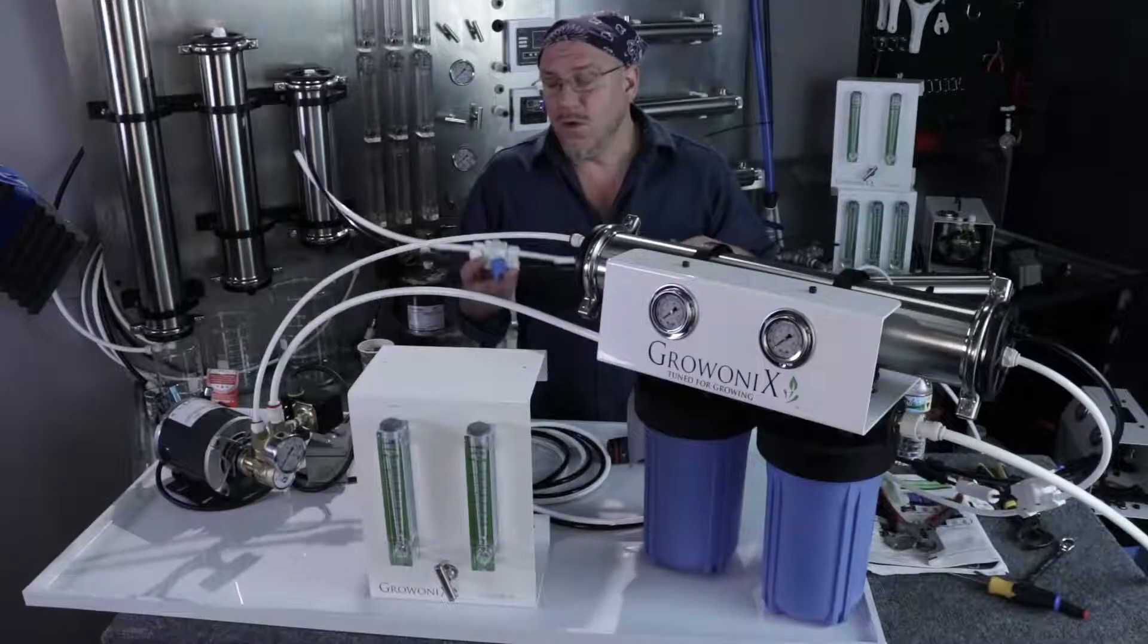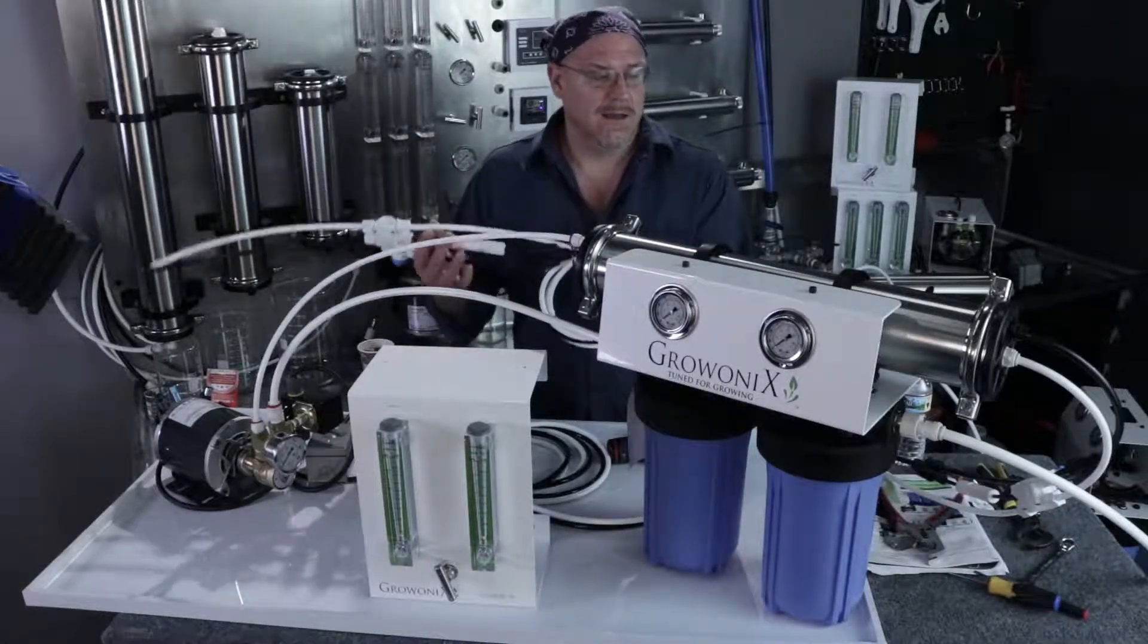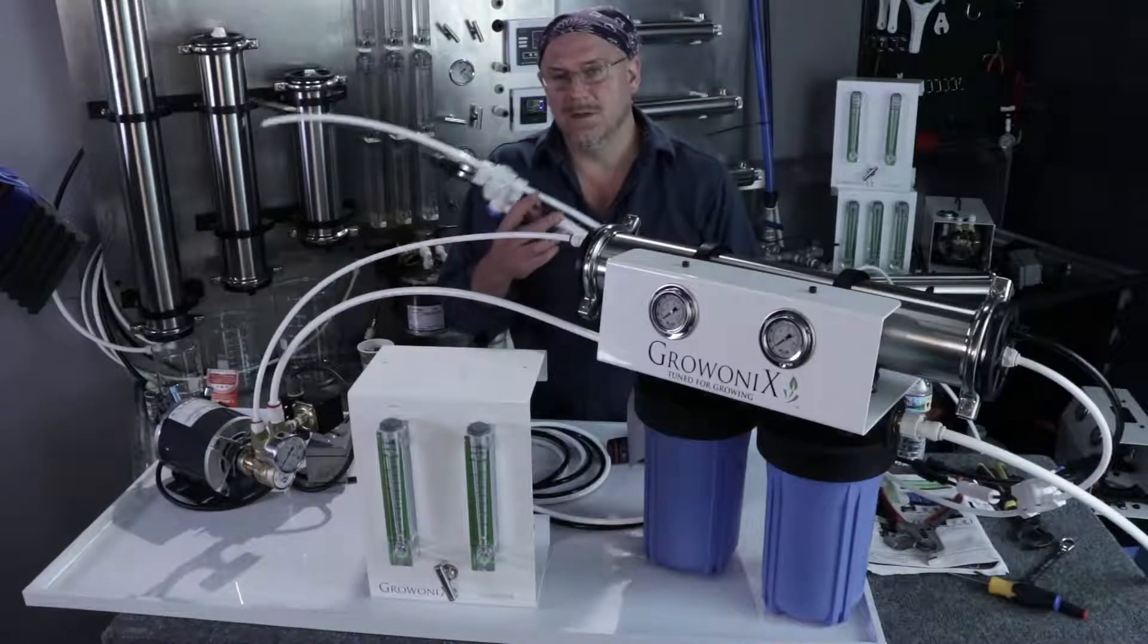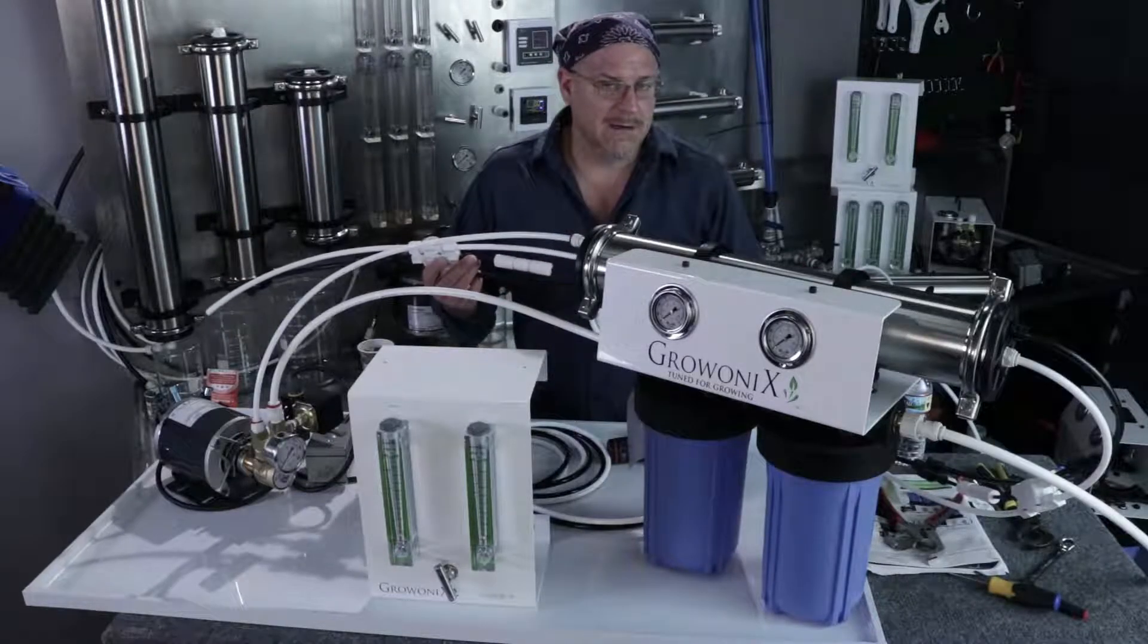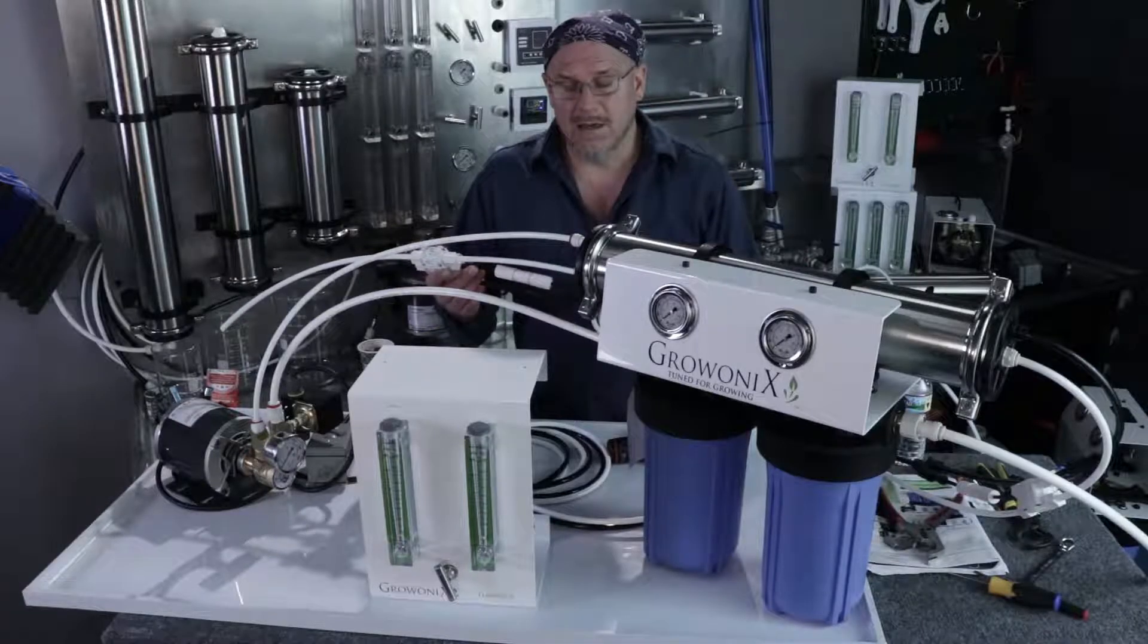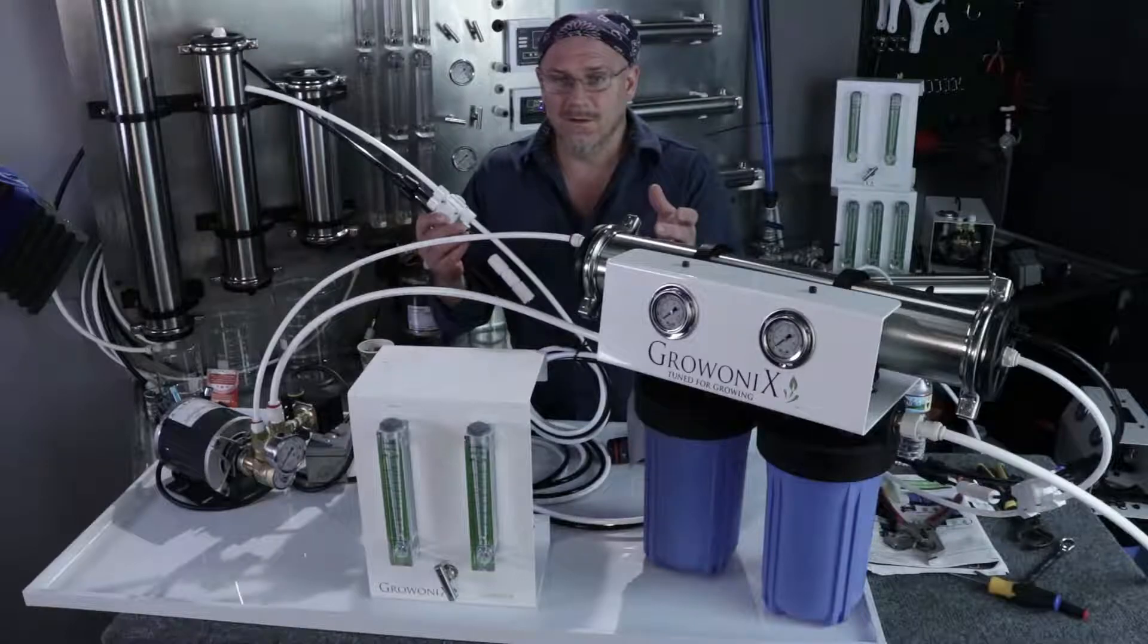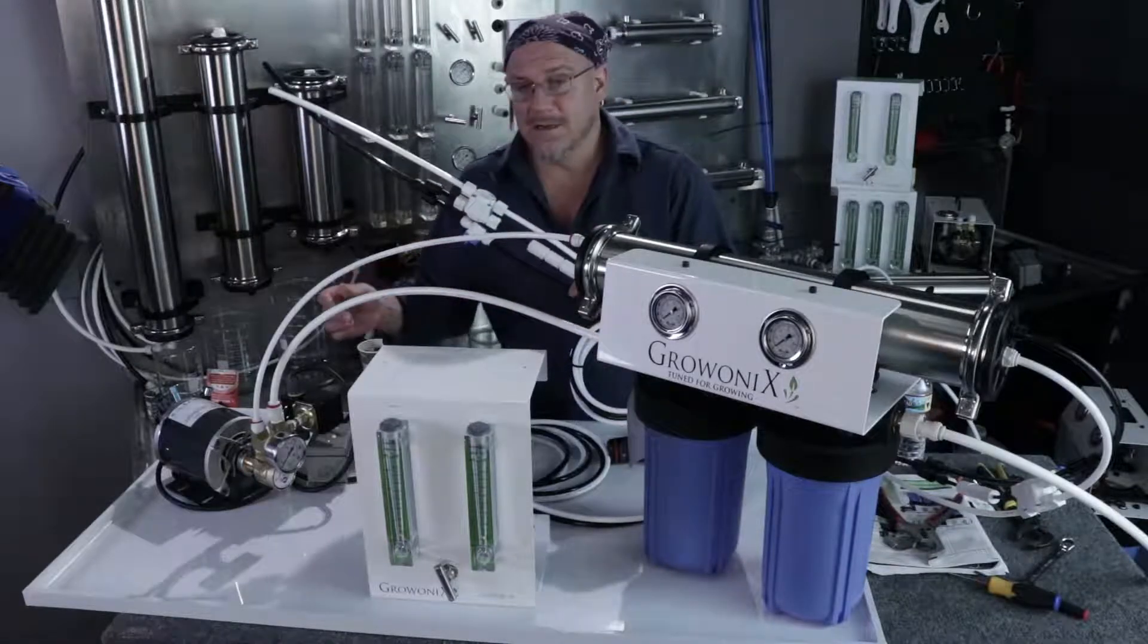The first thing you don't need is the flush kit that's hooked up to this RO currently. You can actually disconnect this and put it aside for later use. You really don't need it. You don't need the ASV, which helps the RO shut off with a float valve because you're not going to use a float valve.